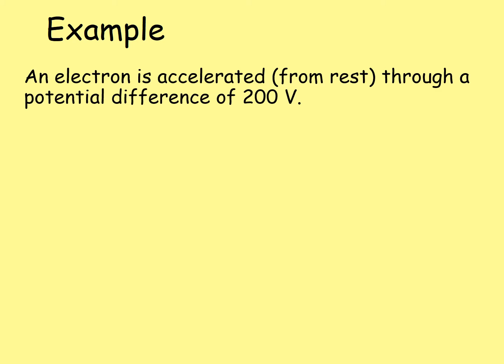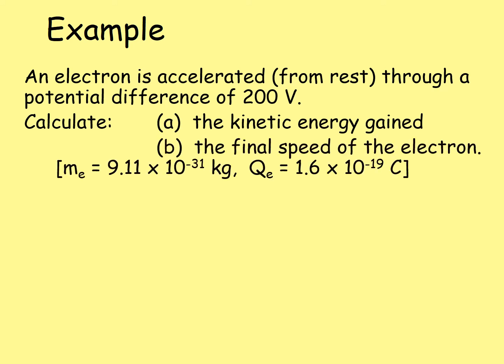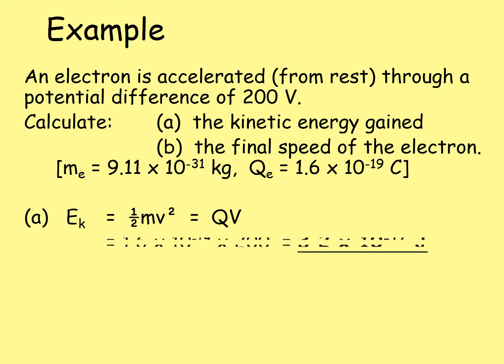For example, an electron is accelerated from rest through a potential difference of 200 volts. You need to calculate the kinetic energy gained and the final speed of the electron. The information needed is the mass of an electron from the datasheet: 9.11 × 10⁻³¹ kg, and the charge on the electron: 1.6 × 10⁻¹⁹ coulombs. The kinetic energy equals the work done, so ½mv² = QV. QV = 1.6 × 10⁻¹⁹ multiplied by 200 volts, giving a kinetic energy of 3.2 × 10⁻¹⁷ joules.